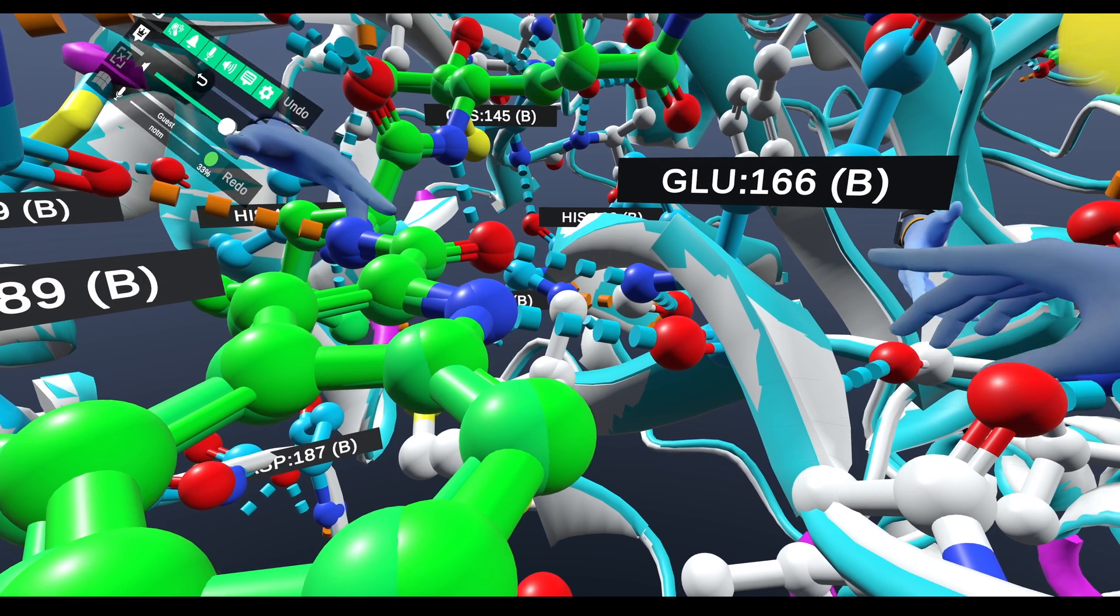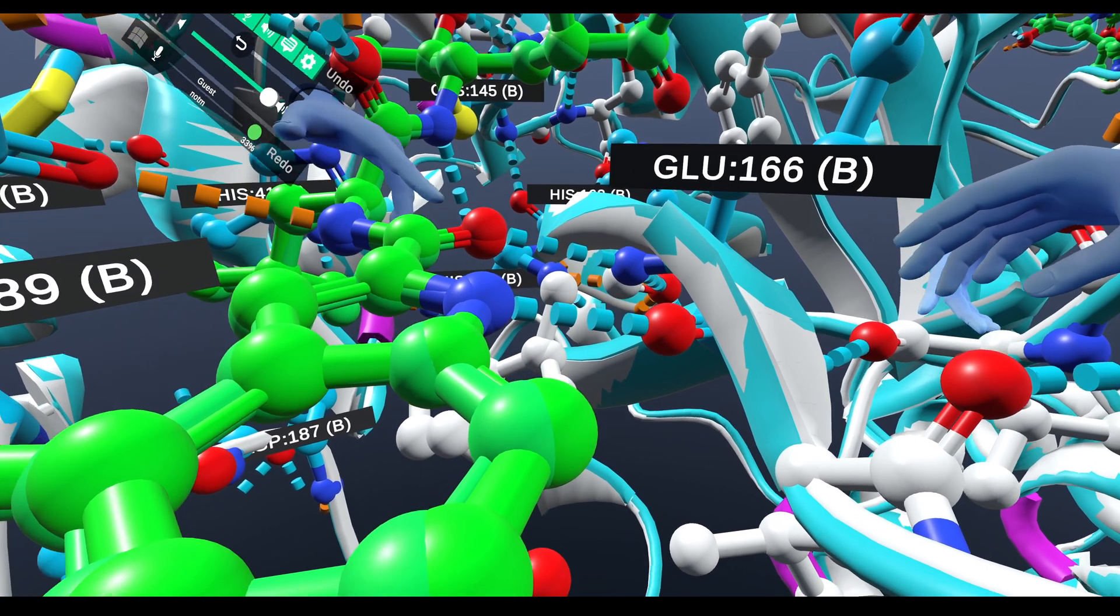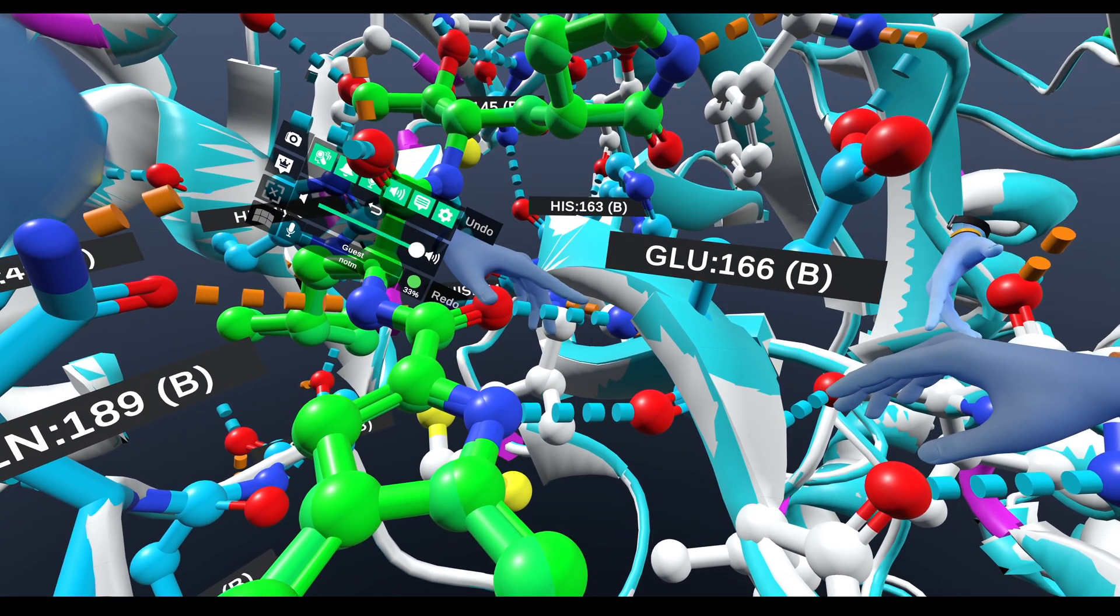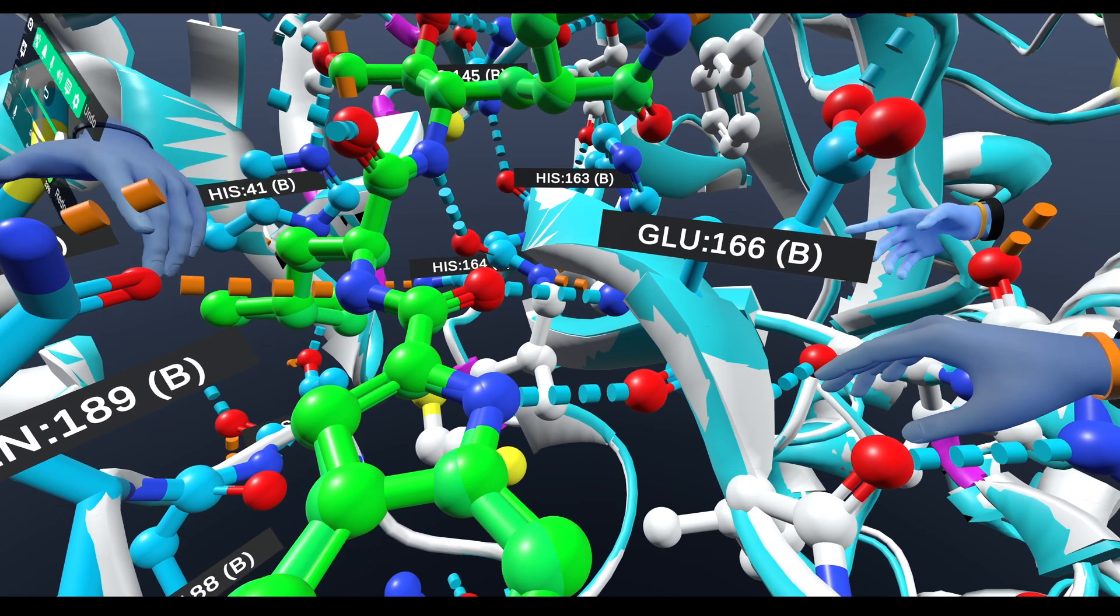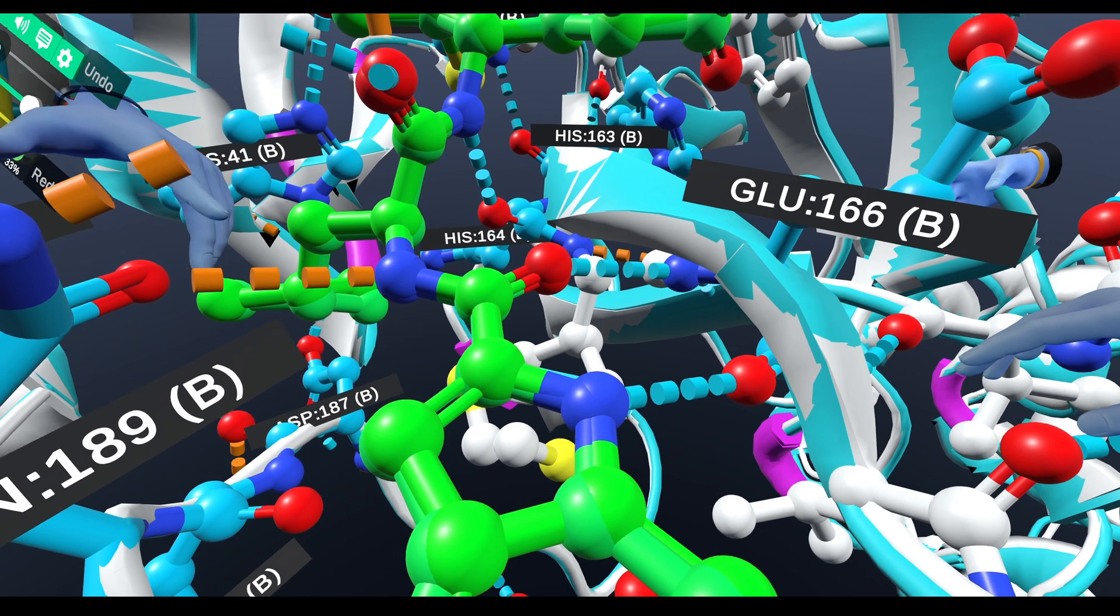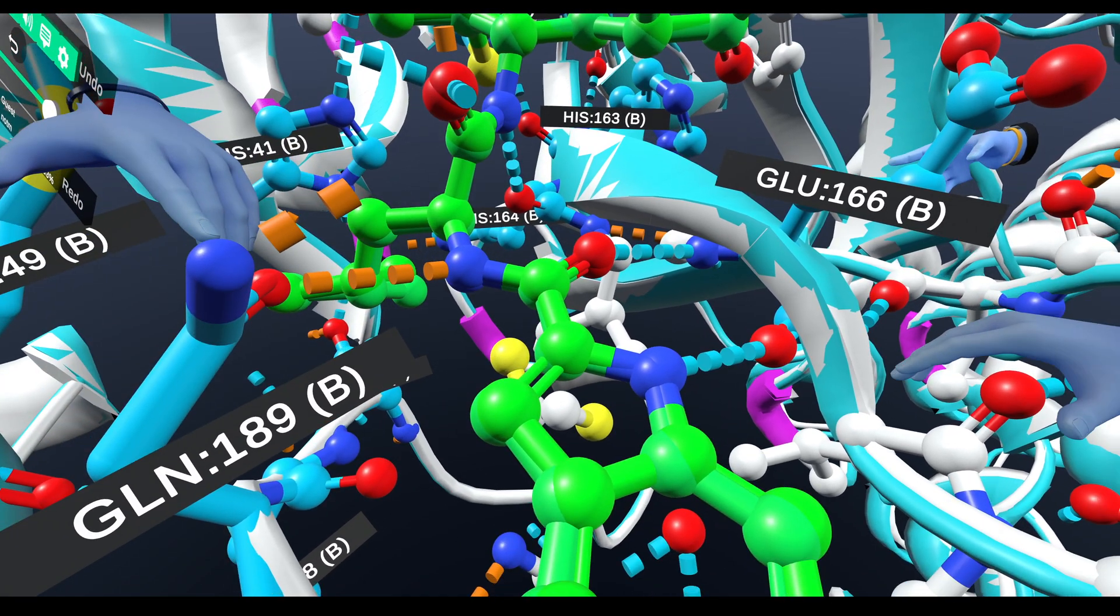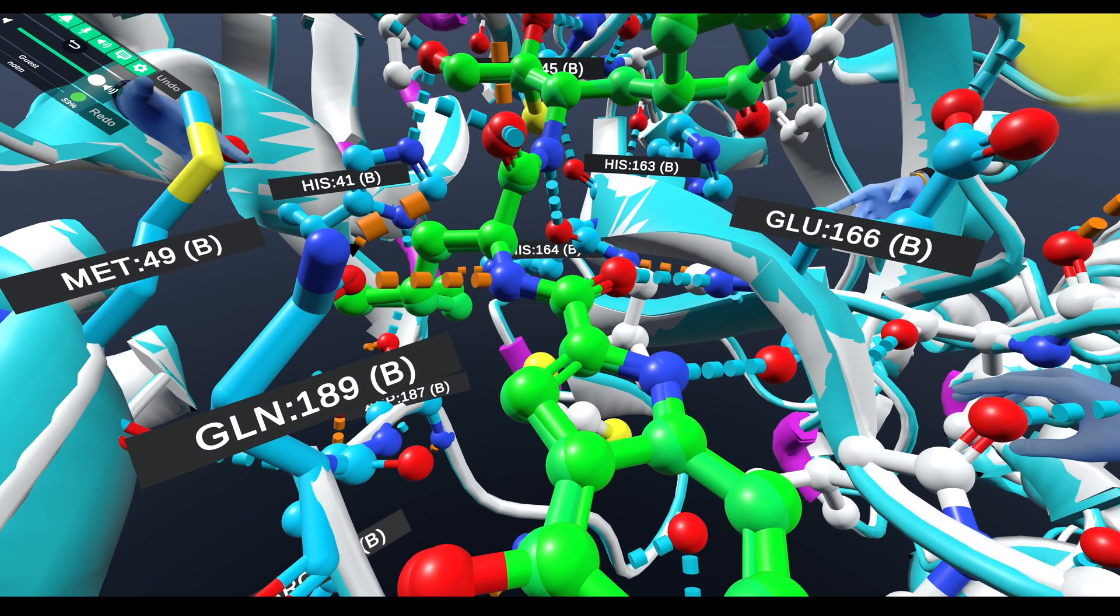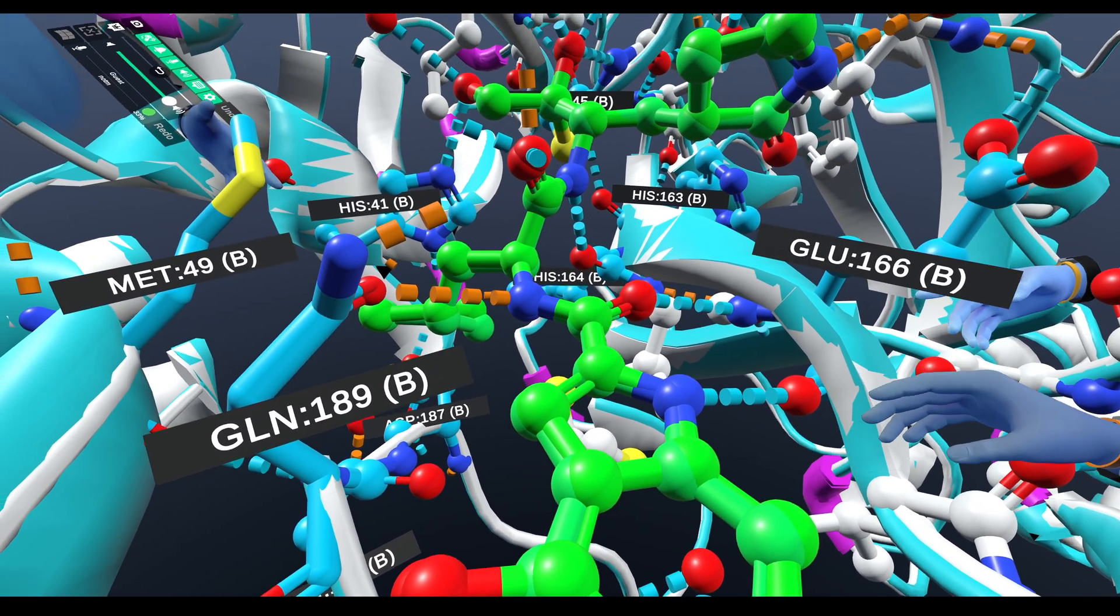And then if you follow along, you can see the amide here is also picking up a hydrogen bond to a backbone NH here and to a carbonyl of glutamine 189 here. So just a lot of nice interactions through here that we can see in nanome.